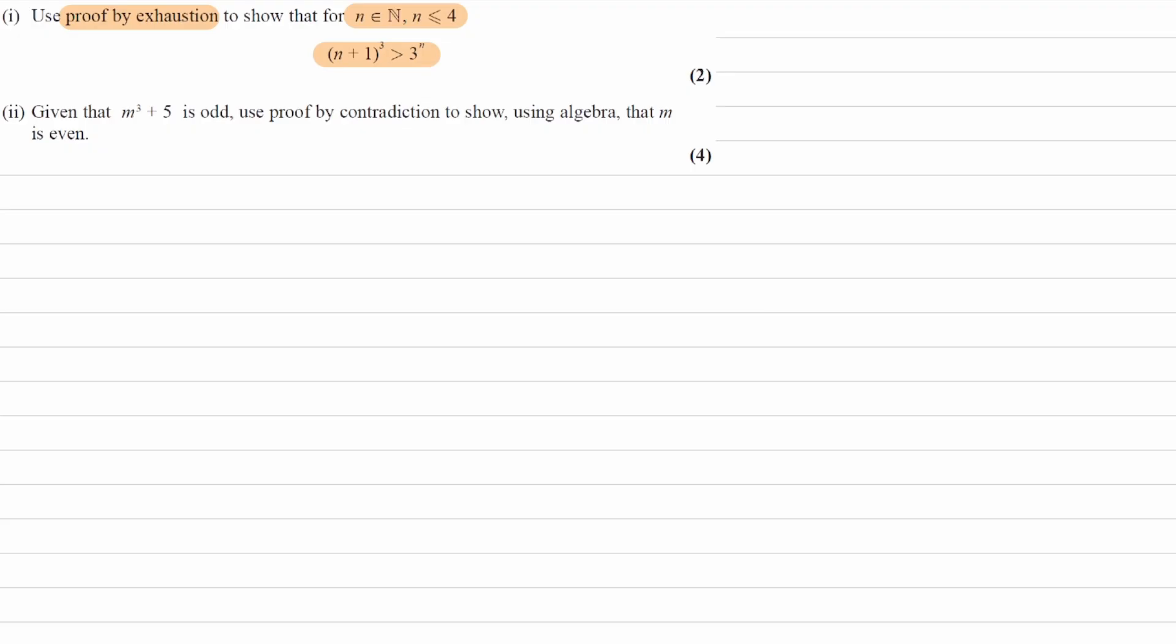So we're trying to show for numbers 1, 2, 3, 4 that this is true. We just individually put in those numbers into this statement or each side of this inequality and show it is true for all of those numbers. So I'll just draw a table out to demonstrate that. n in one column, n plus 1 to the power of 3, the left-hand side of the inequality in another column, and then 3 to the power of n in the final column.